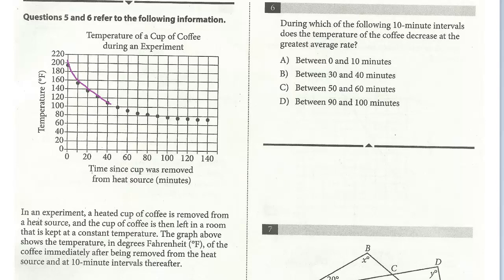Let's read the information. In an experiment, a heated cup of coffee is removed from the heat source and left in a room kept at a constant temperature. The graph shows the temperature in degrees Fahrenheit of the coffee immediately after being removed, at 10-minute intervals thereafter. Right away you can see a pretty steep drop — from almost 200 degrees in the first 10 minutes down to about 150 — and then a more gradual decline that tapers off and stays steady.